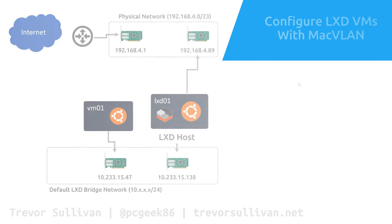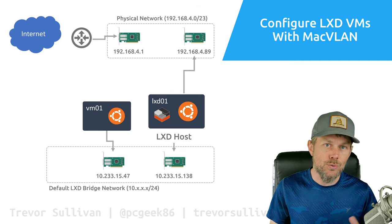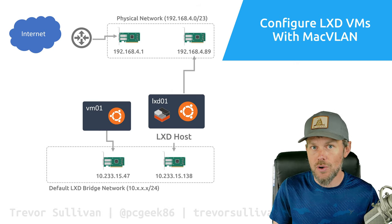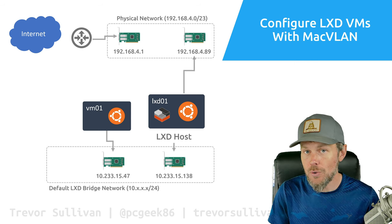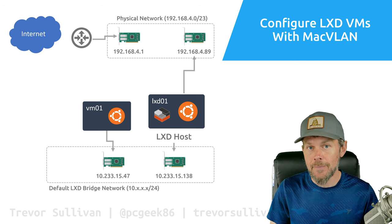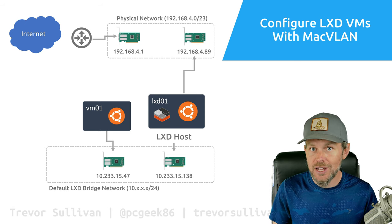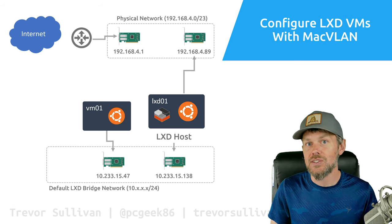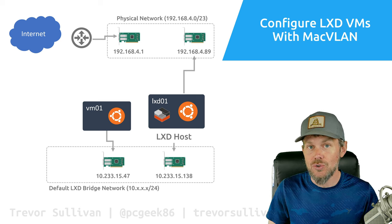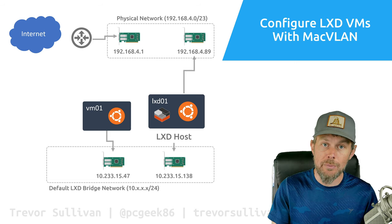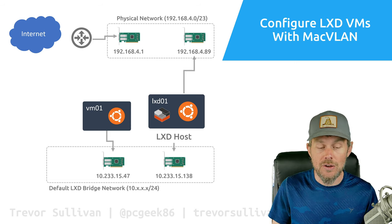Now that we understand forwarding rules, let's talk about MacVLAN. MacVLAN is a really nice way to connect your virtual machines directly to your physical network with minimal overhead. There are some limitations to be aware of — it doesn't work in all circumstances — but if you have a wired physical network interface from your LXD host, you should be able to make use of MacVLAN.